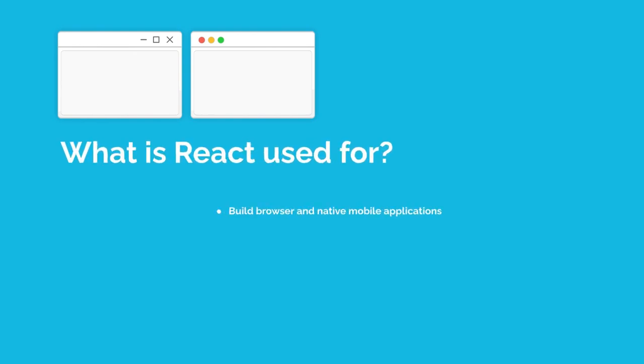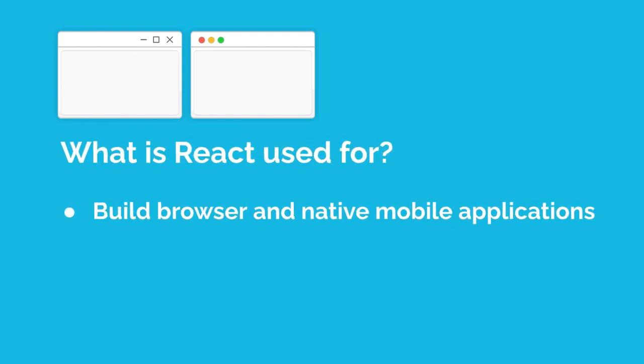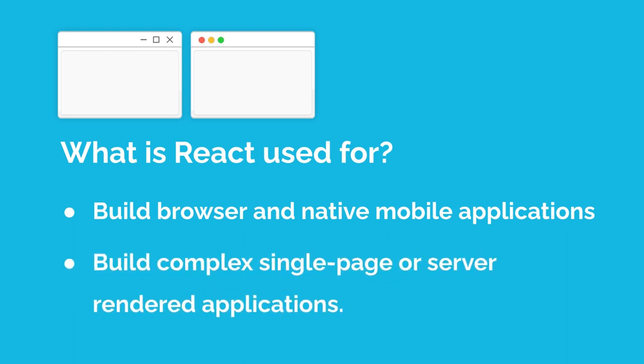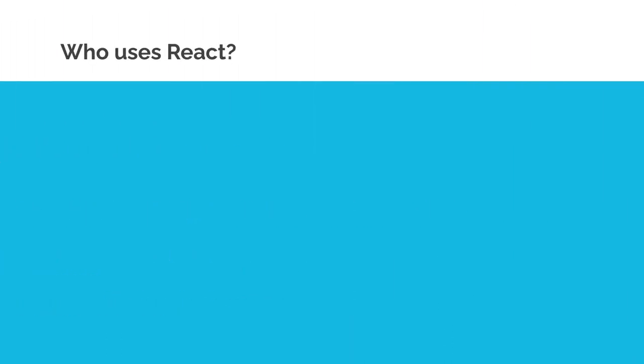What is React used for? You can build browser and native mobile applications with React — websites that work on all types of devices like computers and mobile, as well as native mobile apps for the app stores. You can build complex single-page or multi-page applications that are local or server rendered.